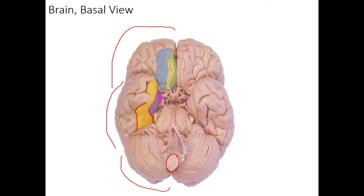In this basal view, I'll also highlight the circle of Willis. Here we can see the two vertebral arteries coming together to form the basilar artery. Branching off of that in either direction are the PCAs — the posterior cerebral arteries.